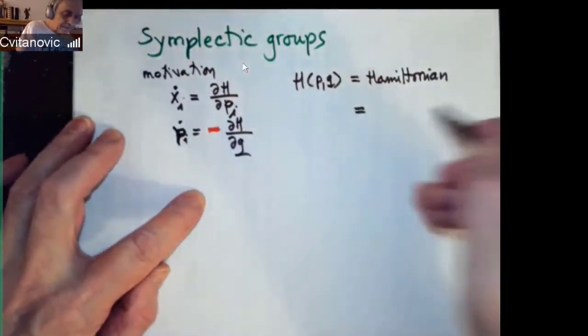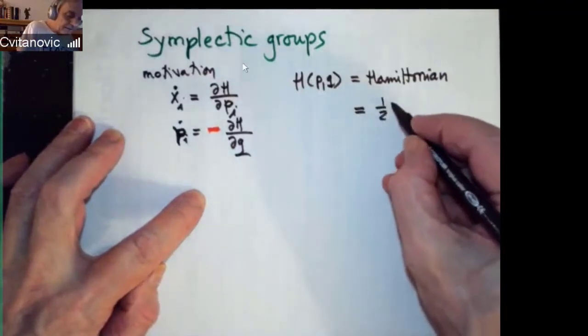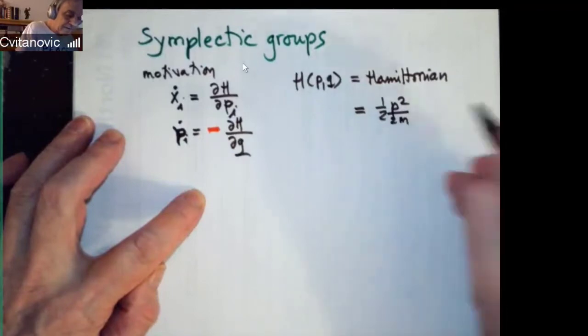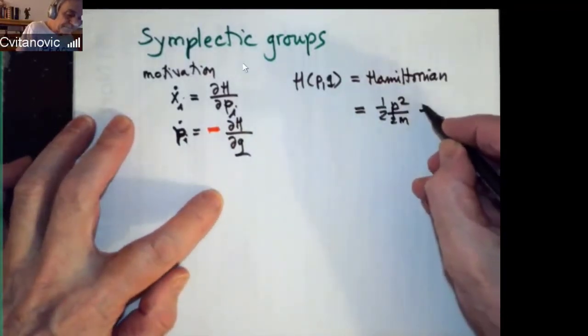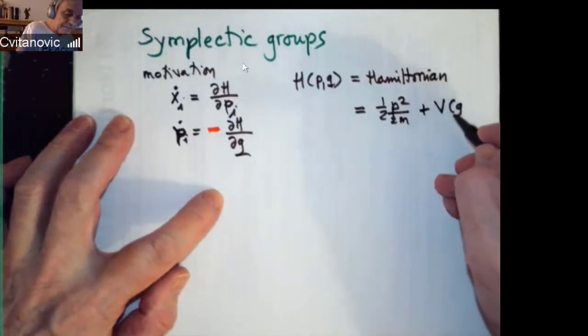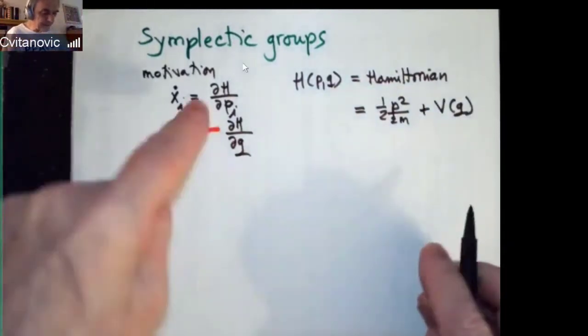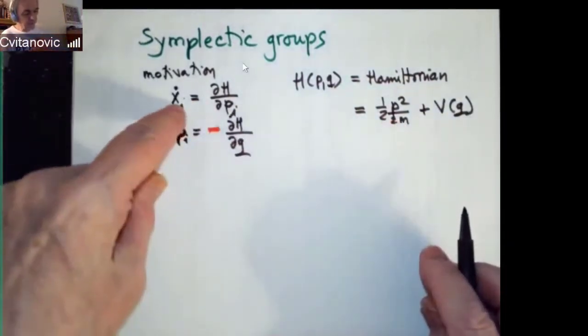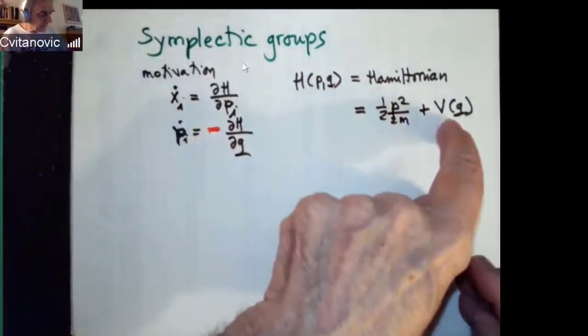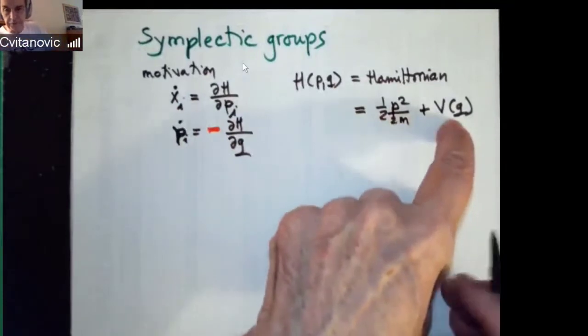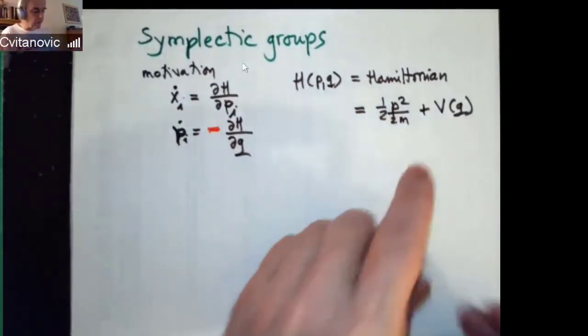And you know this because you have learned that kinetic energy looks like that, for example. And then you have separable Hamiltonians. So this one is picking out, it says my velocity is proportional to momentum, and this one says my acceleration is proportional to gradient of potential. So you know all this. But the important thing is this minus sign.